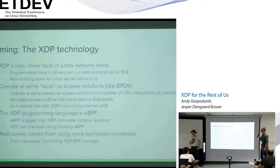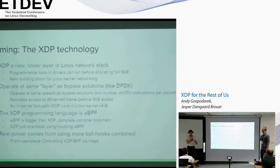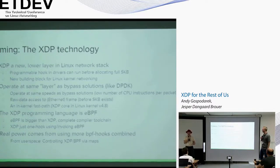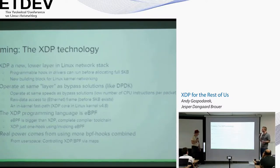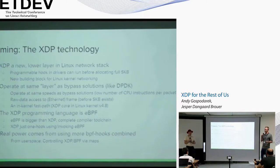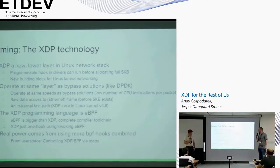We're now in a new era of user-programmable networking. XDP is a programmable hook that runs before we allocate the socket buffer (skb). It operates at the same layer as other bypass solutions like DPDK, in theory at the same speed, with the goal of minimizing the number of CPU instructions run on a per-packet basis. We have raw access to the Ethernet frame before the skbuff exists.